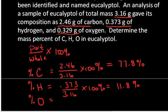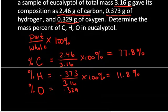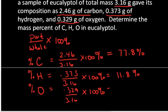And the percent oxygen in the sample is equal to 0.329 divided by 3.16 times 100%. For oxygen, it's 10.4%. So from simple elemental analysis, one can determine the mass percent of the elements within a given compound.